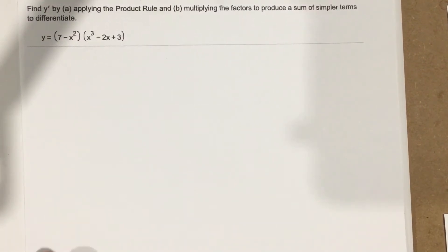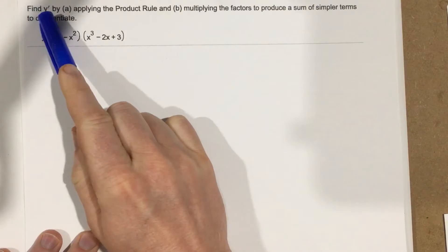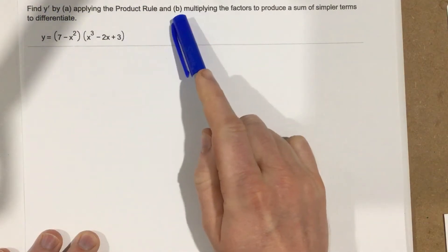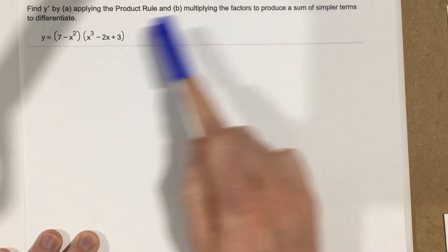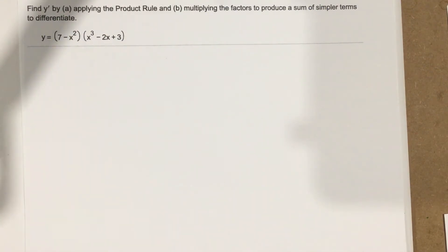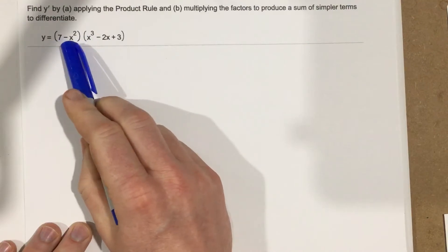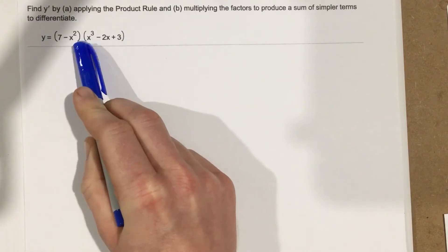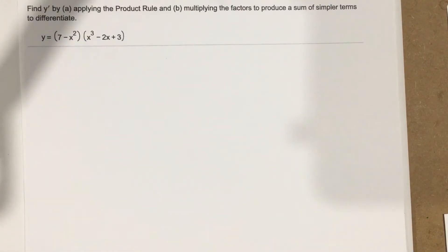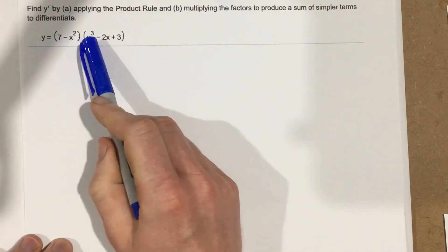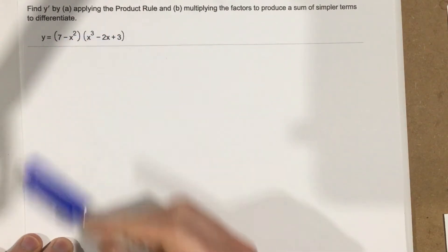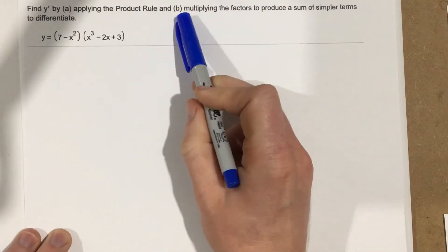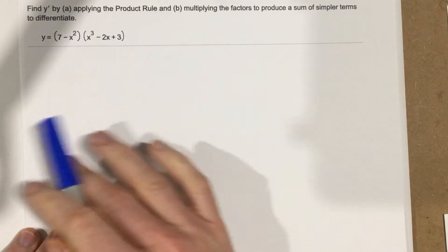This is problem number four for section 3.3. The problem says to find y prime by applying the product rule, and part b by multiplying the factors to produce a sum of simpler terms to differentiate. We're going to introduce this new rule, the product rule, which we use because we have two polynomials being multiplied together — two functions being multiplied — and we can find the derivative without having to distribute out all these terms.